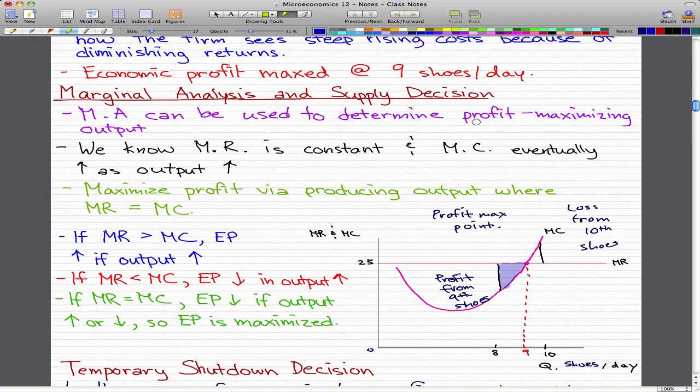This is the profit that we will get from the 9th shoe sold per day. If we go beyond that, if we are making 10 shoes per day, then we suffer a loss. That's the loss from the 10th shoe. Let's just mark these. We know from the last video that our profit maximization point is 9.